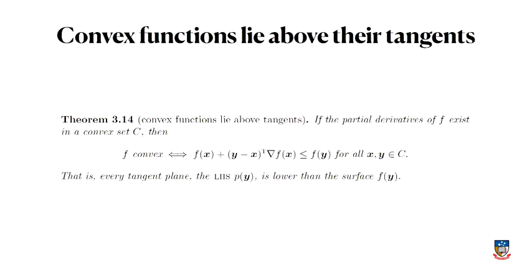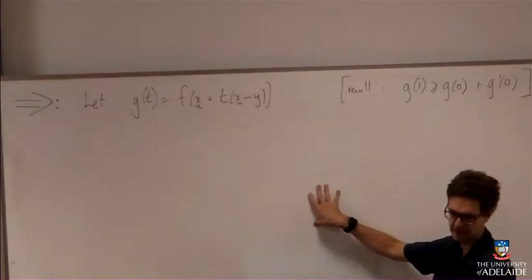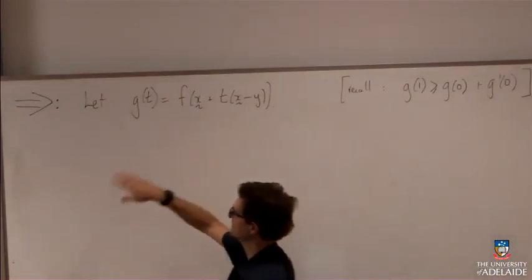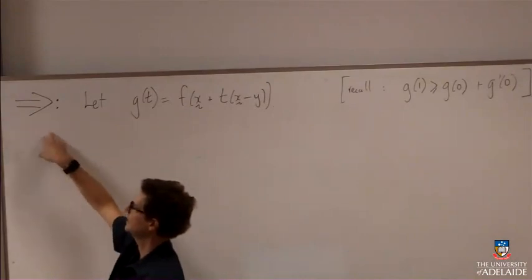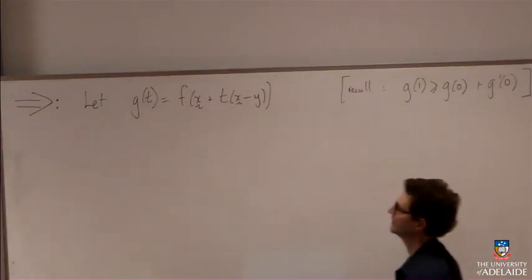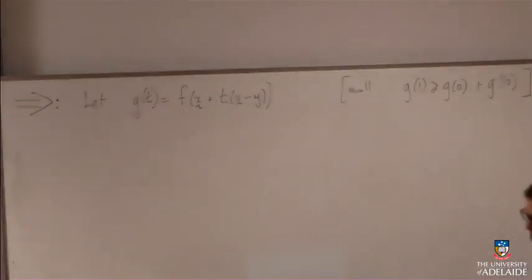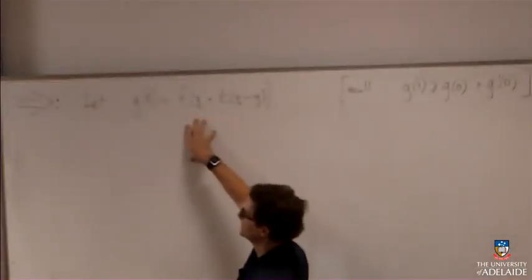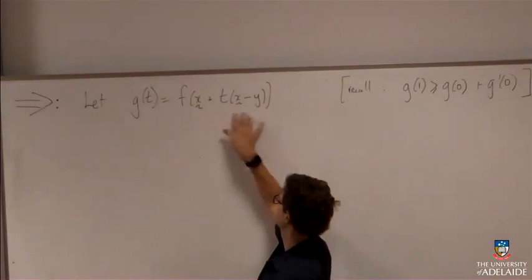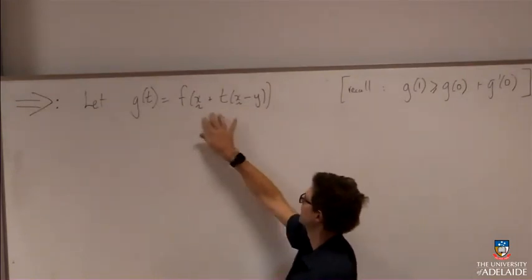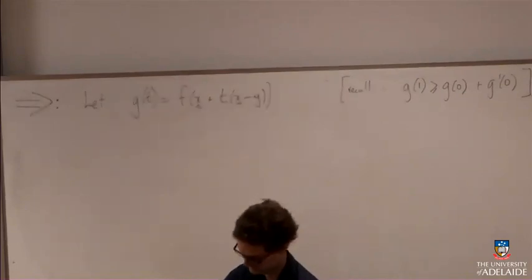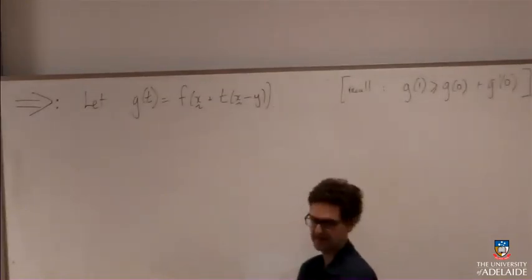So I'll do the forward direction first, coming onto the board here. So I'm going to prove that if f is convex, then the function lies above the tangent. And so to do that, I'm going to define a function. This is the function that appears in the definition of convexity, so it's going to be a useful thing to define.